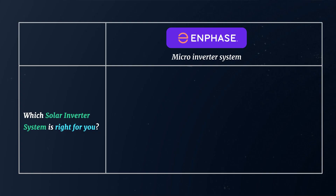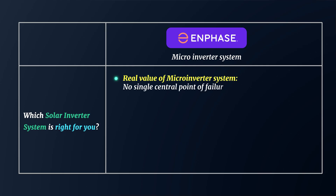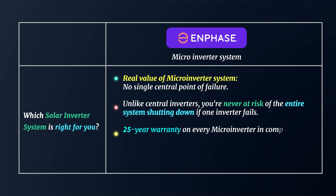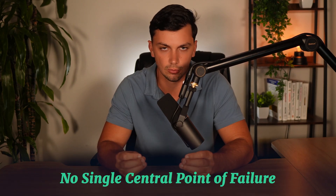On the other hand, there are key factors that can make the Enphase system a lot better, even with its slightly higher price tag. If there's one thing to take away from this video, it is this: the real value of the Enphase system lies in the fact that there is no single central point of failure. With Enphase, you're never at risk of the entire system shutting down if a central inverter on the side of your house fails. Additionally, you get a 25-year warranty on every single microinverter, as opposed to the 12-year warranty that SolarEdge offers on their single central inverter.